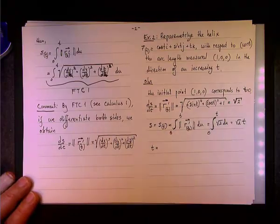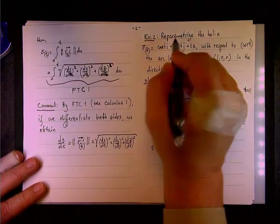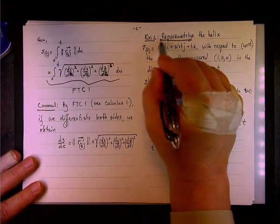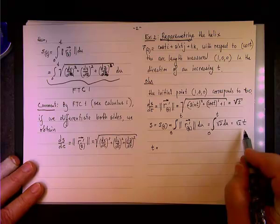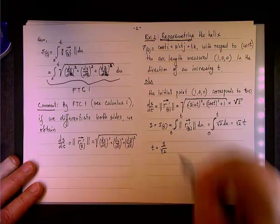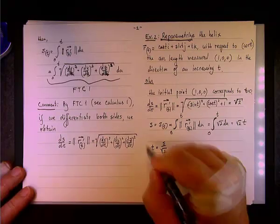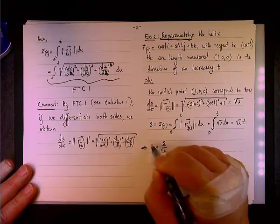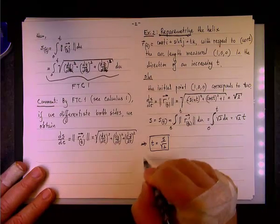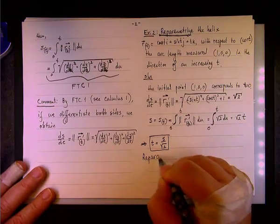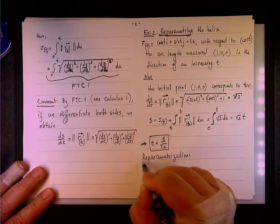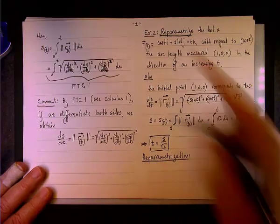So what is this business of re-parameterization? It's expressing t in terms of s — that's what re-parameterization means. So if s equals square root of 2 times t, then t equals s divided by square root of 2. But we are not done, because now we need to express everything in terms of s.